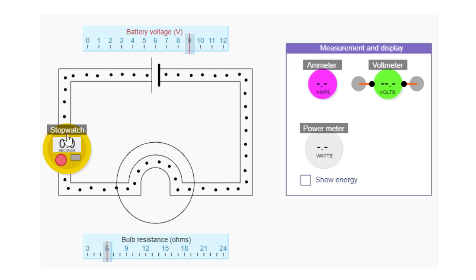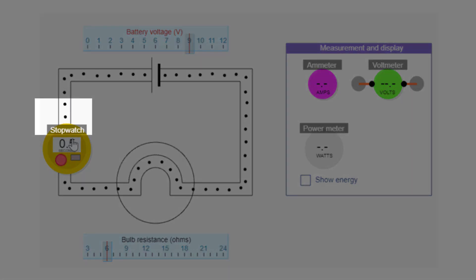For example, charges coming into the top of the stopwatch: 1, 2, 3, 4, 5, 6, 7, 8, 9, 10, etc.